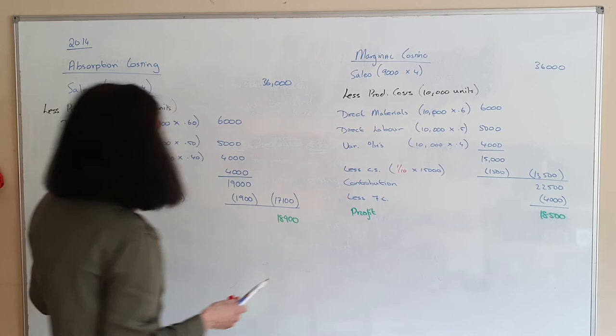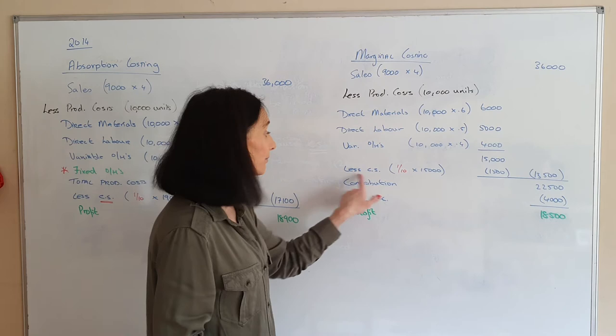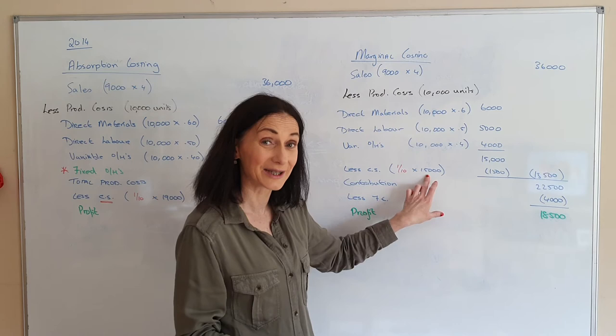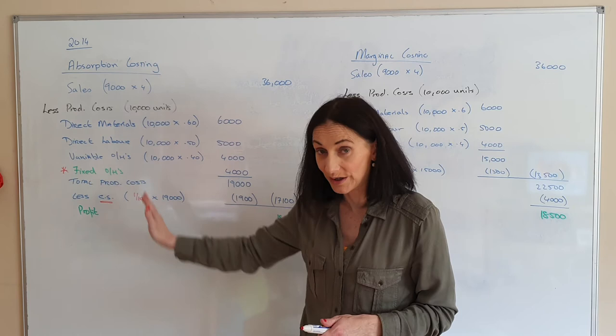If we do marginal costing, the two statements are the same as far as variable overheads, but in marginal costing I don't include fixed overheads. When I'm getting my closing stock in marginal costing, I base it on variable costs only — without fixed overheads. So I'm basing the value of my closing stock on only some of my costs, not all of them.